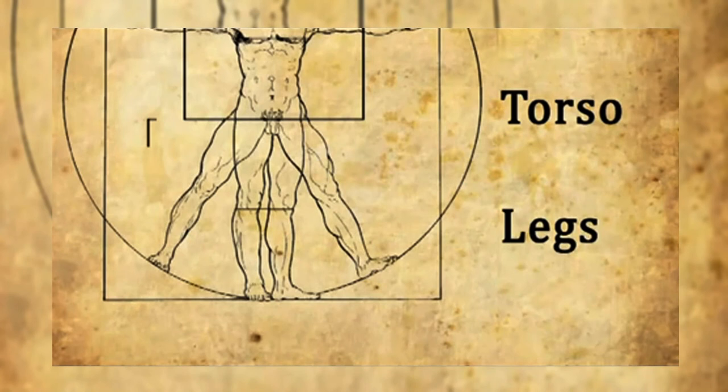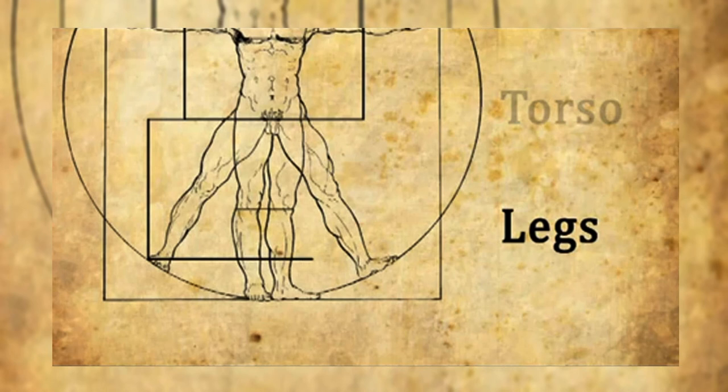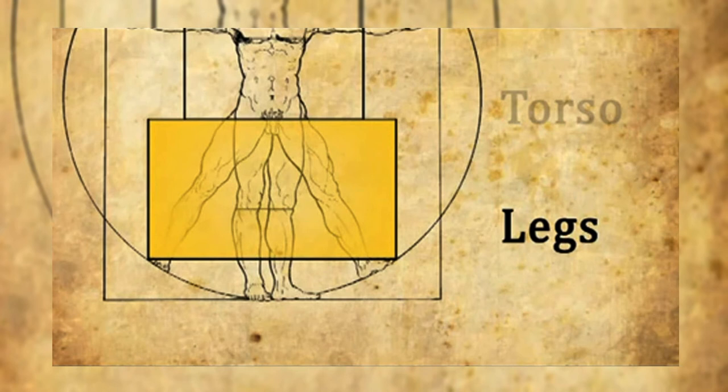For the third set, draw a rectangle whose lower two vertices are at the places where the man's outermost toes touch the outlying circle. The rectangle should extend vertically to the man's waist. This creates yet another golden rectangle.